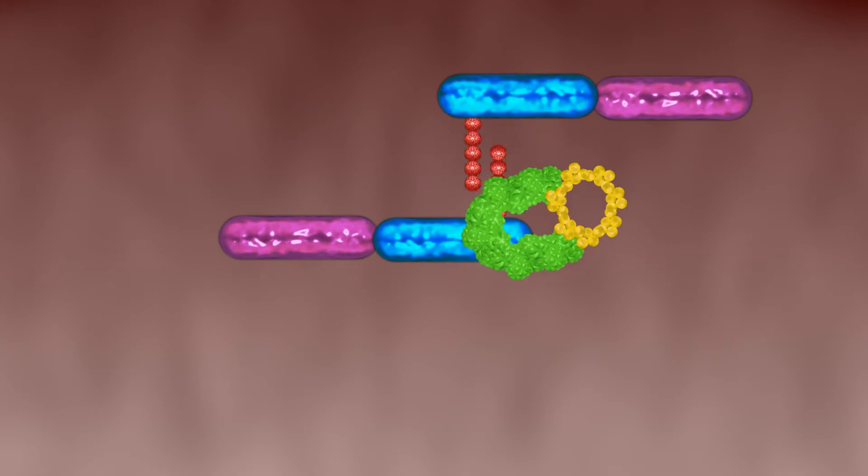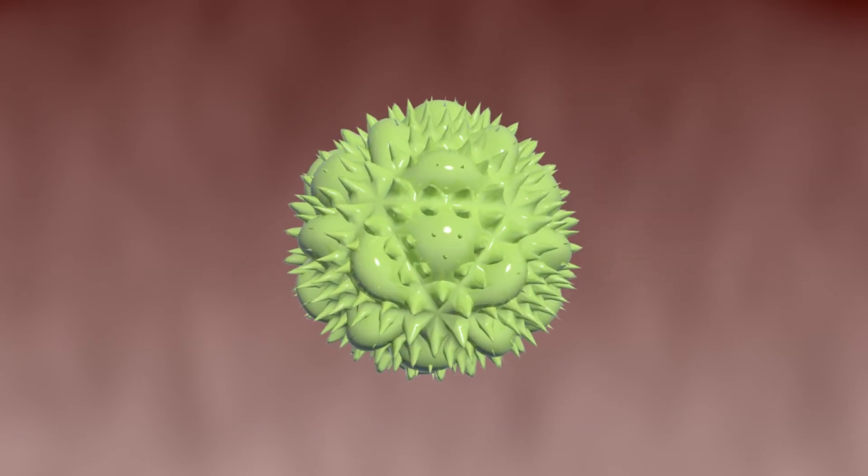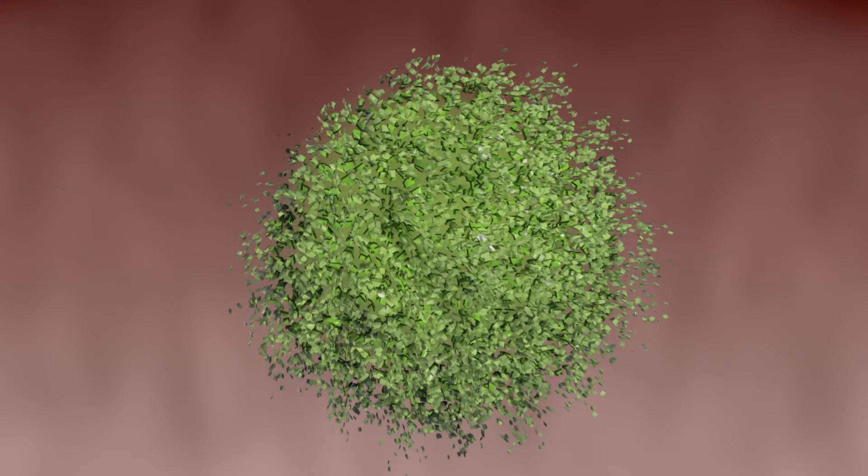The inhibition of cell wall synthesis leads to lysis of the bacterial cell due to high internal osmotic pressure and weak cell wall.